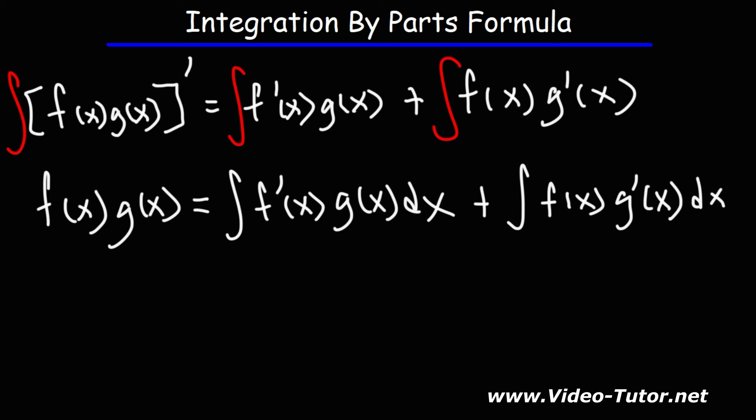Now, what we need to do is rearrange this equation and solve for this expression. I'm going to take this term and move it to the other side. So it's positive on the right side but negative on the left side. So we have f of x, g of x, minus the integral of f prime of x, g of x dx, and that equals the integral of f times g prime.